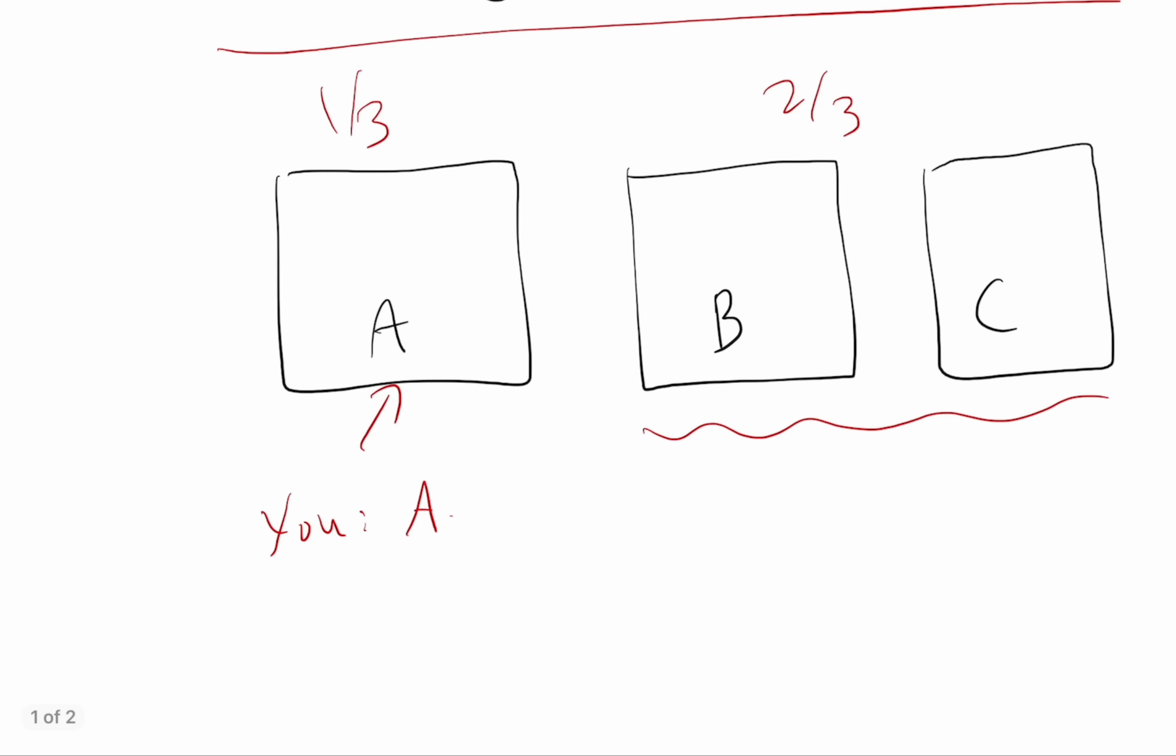And the game show host, the key to understanding it is this: the game show host has some information, and they're using that information. And they're not just randomly opening up one of these two doors. If they randomly opened up one of these two doors, then it wouldn't matter, but they would also open up the one with the prize one-third of the time.